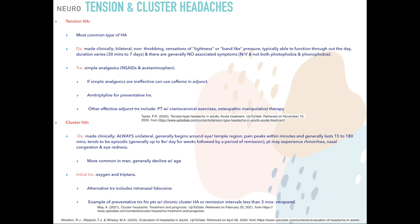Tension headache is the most common type of headache and is diagnosed clinically. It presents as bilateral, non-throbbing tightness or band-like pressure. Patients are generally able to function throughout their day. Duration varies from 30 minutes to 7 days, with generally no associated nausea, vomiting, photophobia, or phonophobia. Treatment is simple analgesics — NSAIDs or acetaminophen. Caffeine can be used as an adjunct. Amitriptyline is preventative. Physical therapy with cranial-cervical exercises or osteopathic manipulation therapy are alternatives if medications aren't working.